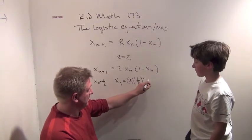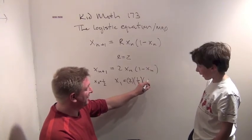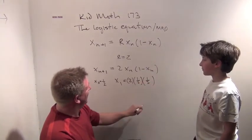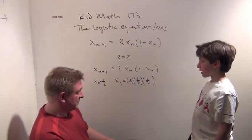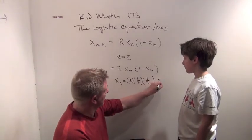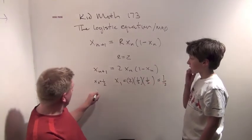So 2 times 1 half times 1 minus 1 half, which is 1 half. Then what is 2 times 1 half times 1 half equal? It's 1 half. So this says x1 equals 1 half.